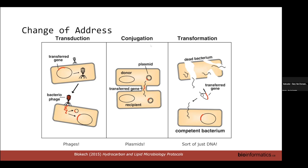The second method is conjugation, which most people are pretty familiar with. This is a sexual transmission method that requires direct contact between the donor and recipient cell. The lateral gene transfer is typically mediated by a plasmid that has the functionality to replicate itself, partition itself, and create the pili or other mechanisms to allow for cytoplasmic transmission of its content from the donor into the recipient.